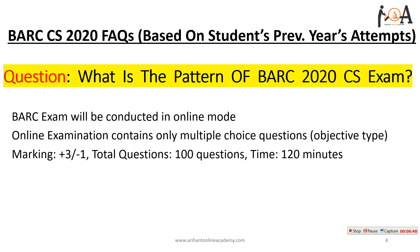Regarding the pattern of BARC CS 2020: it will be conducted in online mode and all questions will be objective type. A correct answer gives plus three marks and a wrong answer gives minus one mark. There are 100 questions total and a two-hour time limit. Time management will be a key strategy in this exam — the level may not be extremely high, but time strategy will lead you to a good score.